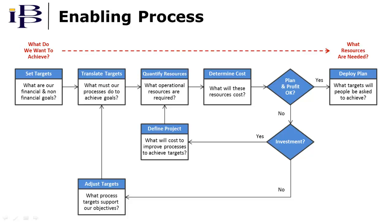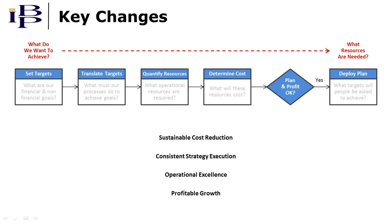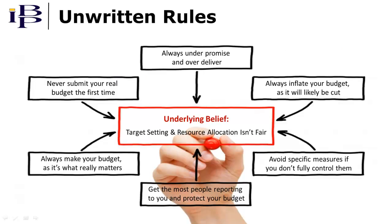Describing this process in detail is beyond the scope of this video. The main thing to note is that it answers the questions we started with — what do we want to achieve and what resources do we need. This process also provides the basis for sustainable cost reduction, because it enables cost structures to self-adjust to changing market conditions to deliver target margins. The absence of processes that support these capabilities is one of the primary reasons why organizations have difficulty achieving this objective. An important benefit is that such processes instill confidence in the fairness of target setting and resource allocation, providing the foundation to address common unwritten rules that evolve when this confidence does not exist.